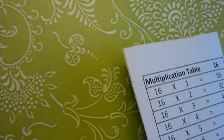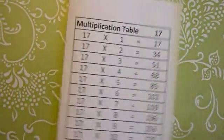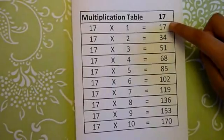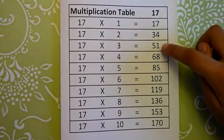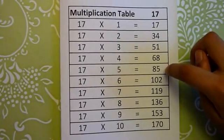Next, we'll go on to multiplication table 17. 17 ones are 17, 17 twos are 34, 17 threes are 51, 17 fours are 68, 17 fives are 85.